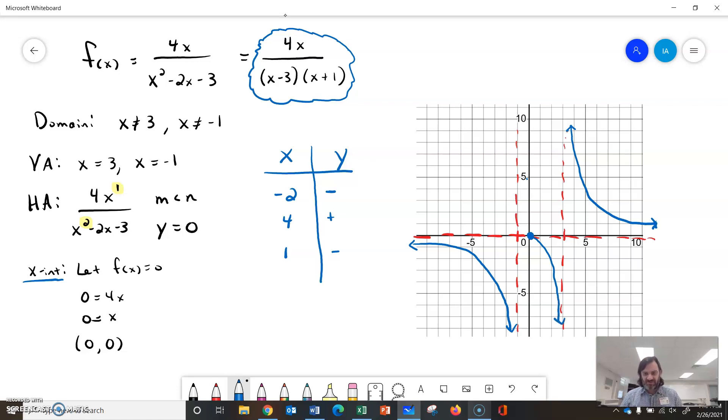Between 0 and -1, maybe -1/2, it'll be tight in there, but if you plug that in, you get negative over negative times positive, so the bottom will be negative, and negative over negative will be positive.